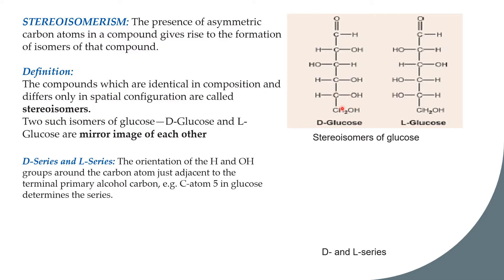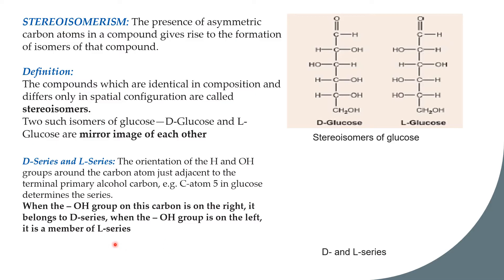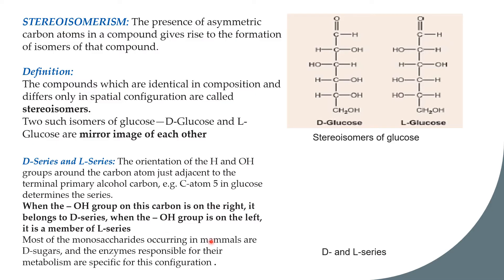This is the fifth carbon in glucose, and it determines the series. If the OH on carbon 5 is on the right side, it is the D series; if it is on the left side, it is the L series. The adjacent carbons follow an alternating pattern relative to this terminal carbon. When the OH on this carbon is on the right side, it is the D series; on the left side, it is the L series.